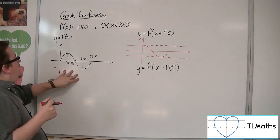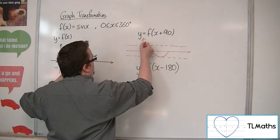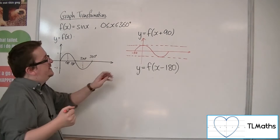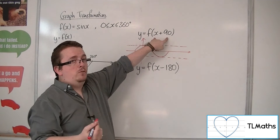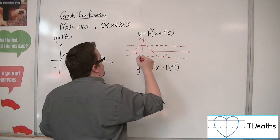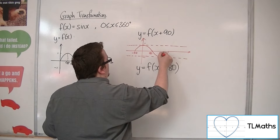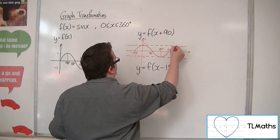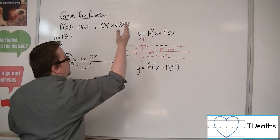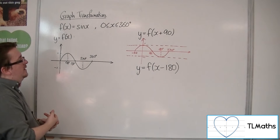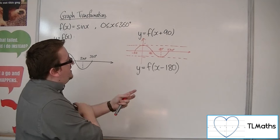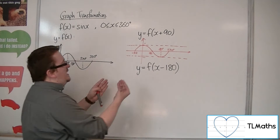Because it must maintain its original form, that must mean it comes back round over here. So when x is minus 90, I get f of 0, which we know is 0. So here is minus 90, there is 1, there is minus 1, here is 90, here is 180, and here is 270. So this is the curve of y equals f of x plus 90. Clearly what's happened is that it shifted to the left by 90 degrees.